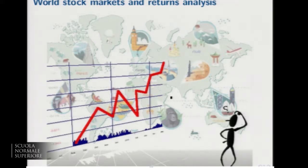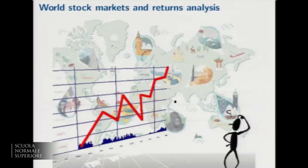If one looks at the situation globally, there is a very lucky country — the US — where data coverage is very full and quite good. But if one looks at other countries, the situation changes and they are less fortunate. Our main motivation two years ago when we started this work was to try and provide coverage for historical return analysis and Fama-French type portfolios for other country markets.